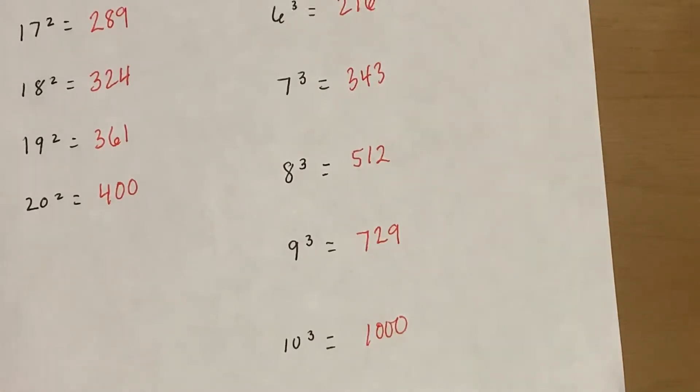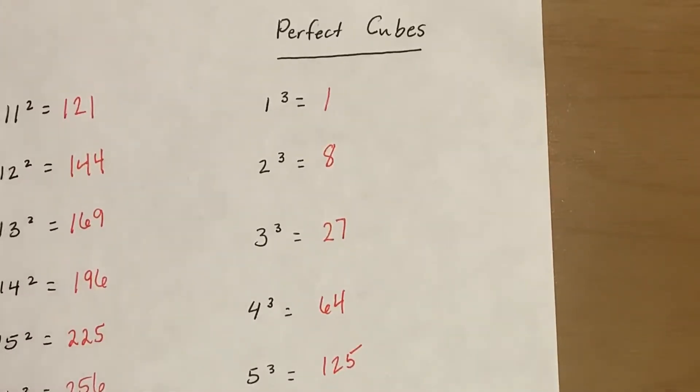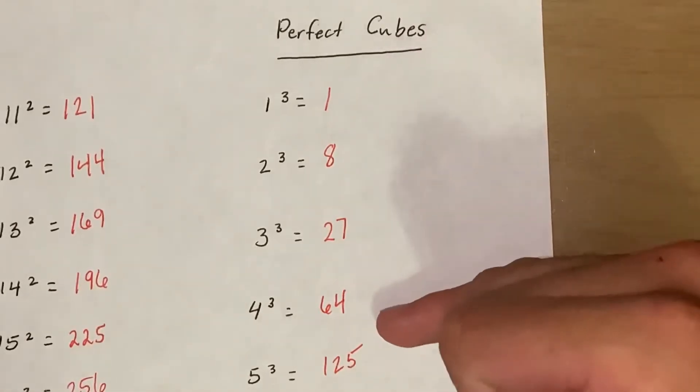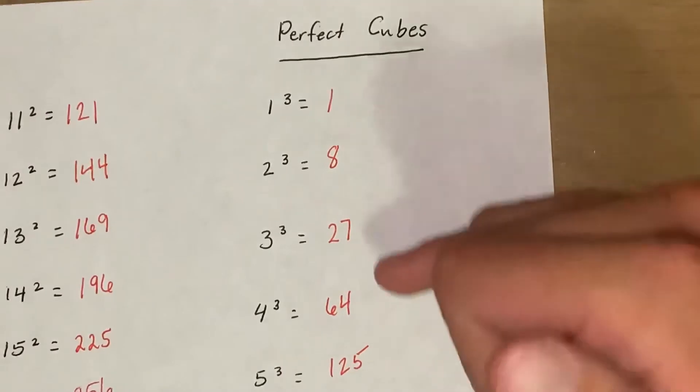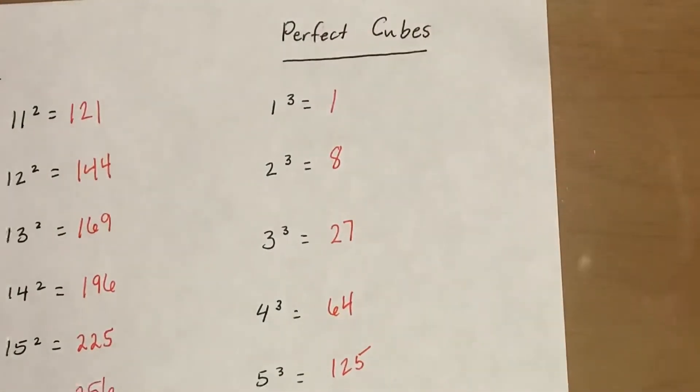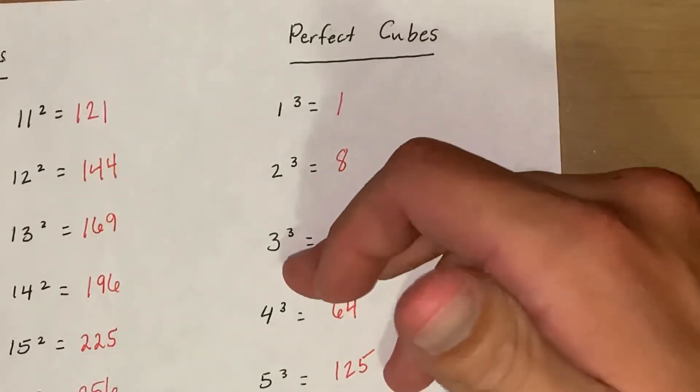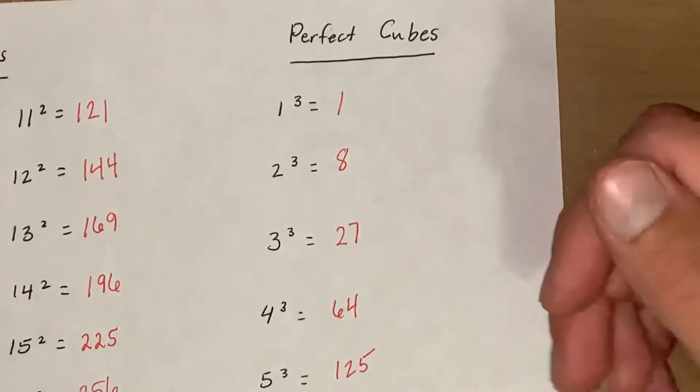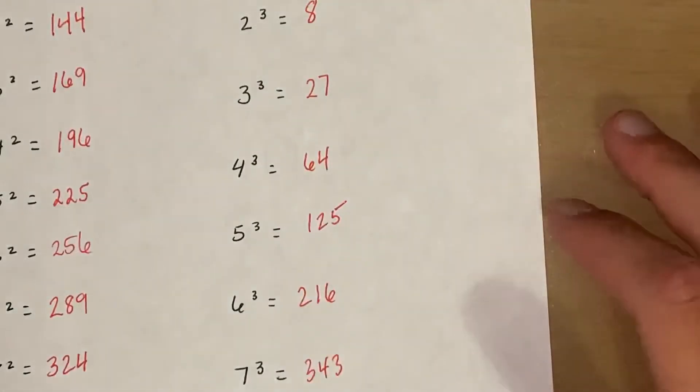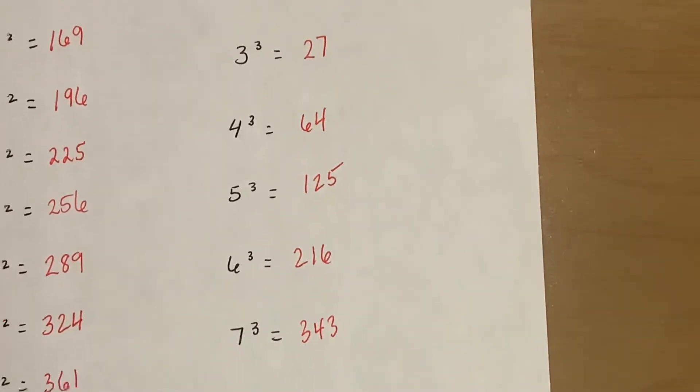Okay for the perfect cubes, I think 1 through 4 should be pretty easy. Just think, 1 cubed should be easy. 2 cubed: 2 times 2 is 4, times another 2 is 8. 3 times 3 is 9, 9 times 3 is 27. 4 times 4 is 16, 16 times 4 is 64. 5 times 5 is 25, 25 times 5 is 125. I think those should be pretty easy.